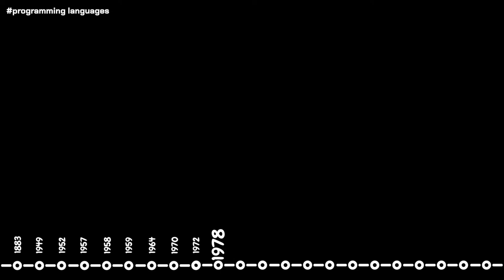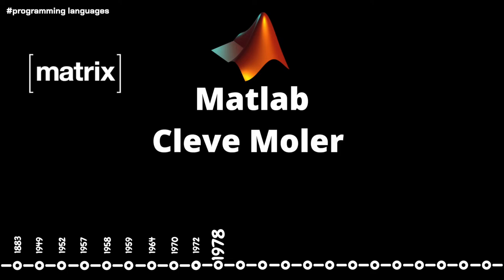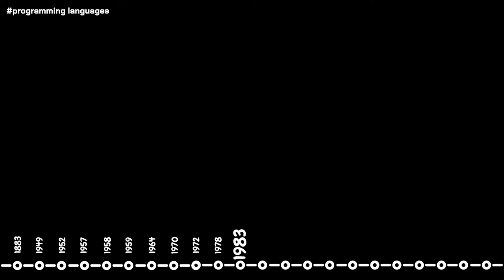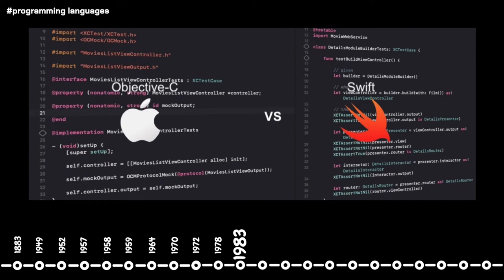Created in 1978 by Cleve Moler, MATLAB stands for Matrix Laboratory. It is amongst the best programming languages for advanced mathematical computation and is indispensable in mathematical research. Moving to 1983, we first see Objective-C. Created by Brad Cox and Tom Love, Objective-C combined Smalltalk style with C programming language. Until the recent development of Swift in 2014, Objective-C was the main programming language for Apple's macOS and iOS.